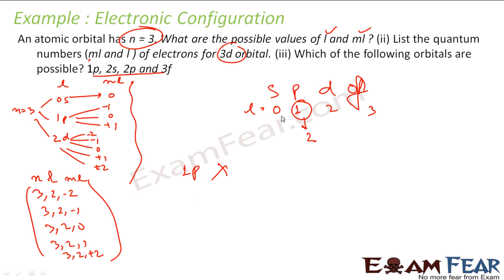Is 2S possible? For S, L is equal to 0, so the minimum value of n is 1. Therefore 1S, 2S, and anything above is possible — so yes, 2S is possible. Is 2P possible? Yes. For P, L is equal to 1, and the minimum value of n is L plus 1, which is 2. So 2P is possible.